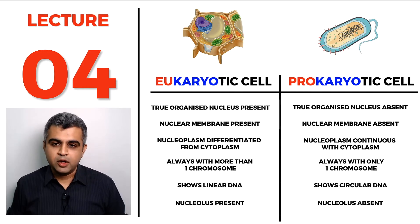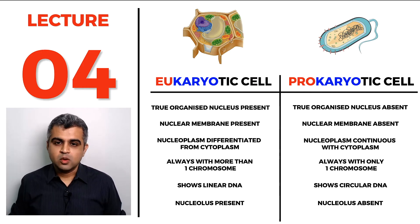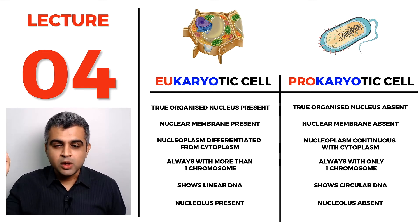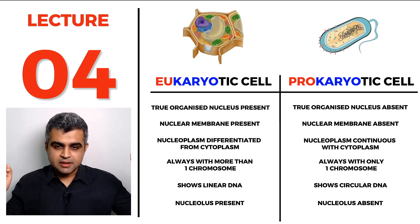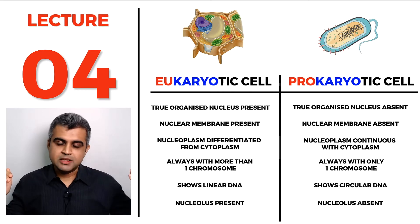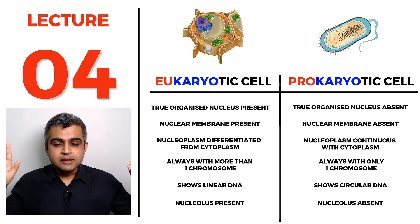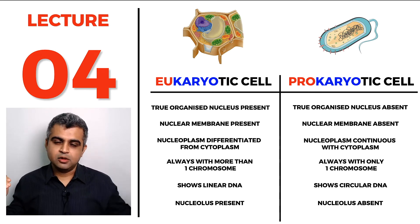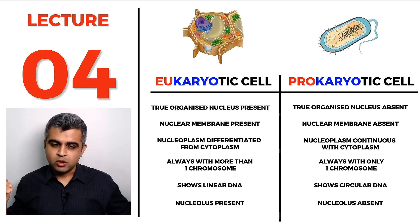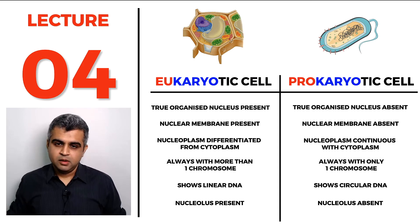Comparing eukaryotic and prokaryotic nuclei: a eukaryotic nucleus is a true organized nucleus with a nuclear membrane, separate nucleoplasm, more than one chromosome, linear DNA, and a nucleolus present. A prokaryotic cell has a dark-staining area called the nucleoid, no nuclear membrane, nucleoplasm continuous with the cytoplasm, only one chromosome, circular DNA, and no nucleolus.